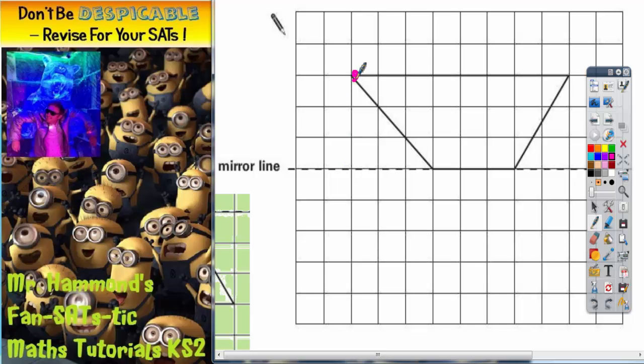So for example this corner is one, two, three squares to the mirror line so we do the same again on the other side, one, two, three squares would mean that corner goes there.